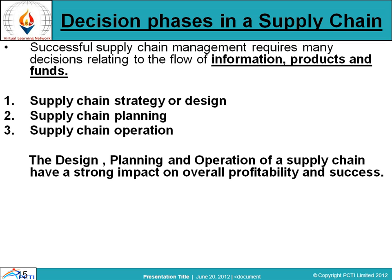Decision phases in the supply chain: for successful supply chain management, it requires many decisions relating to the flow of information, products, and funds. There are three types of parameters that help in the design decision phase: supply chain strategy, supply chain planning, and supply chain operation. Design, planning, and operation of a supply chain have a strong impact on overall profitability and success generation — these three parameters are very helpful in supply chain management.